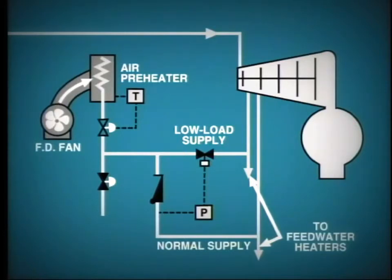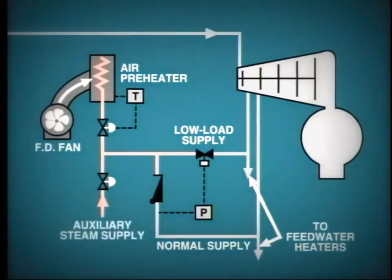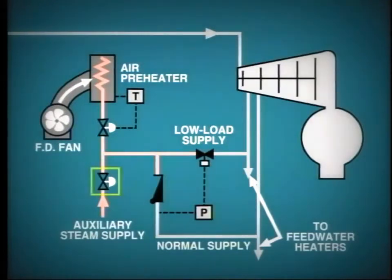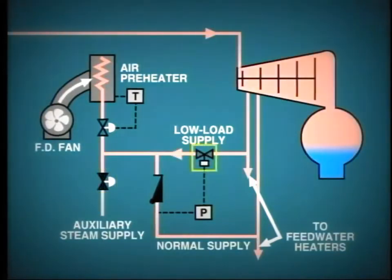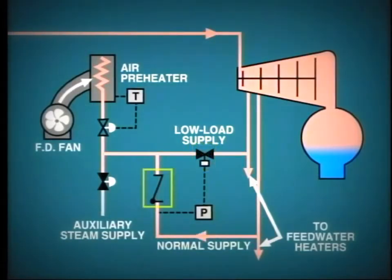In this case, a third supply of steam is available from the auxiliary steam system. Each of these control valves automatically opens in the correct sequence: one, the auxiliary steam supply during startup; two, the first stage steam extraction during low load; and three, the second stage steam extraction at high load.